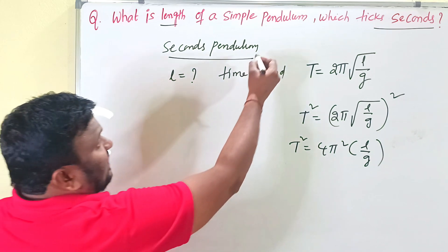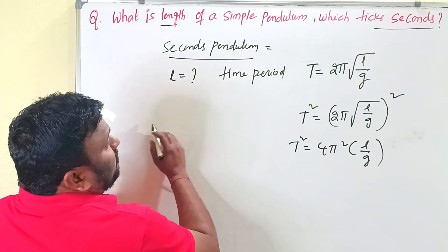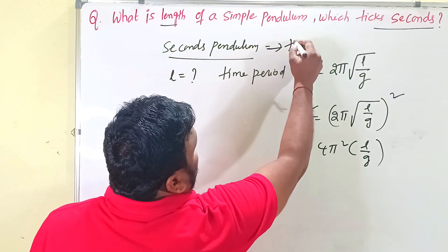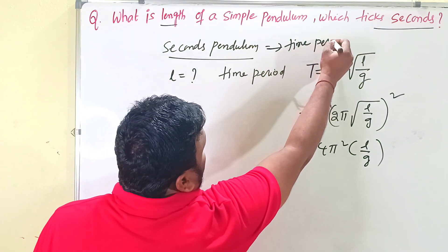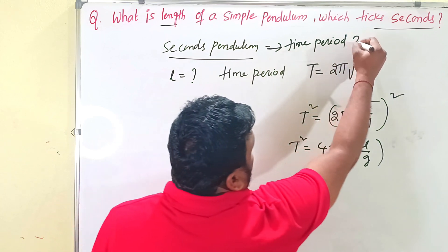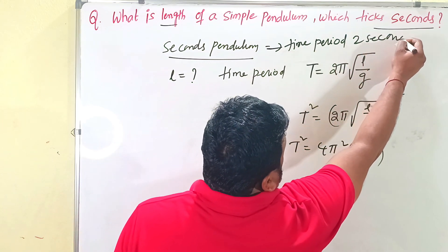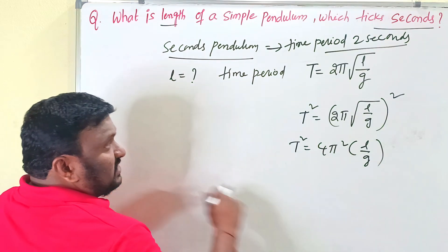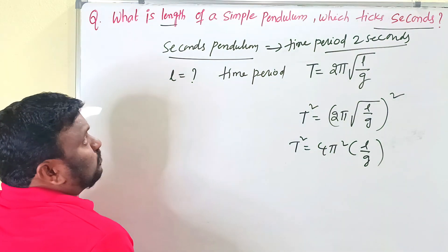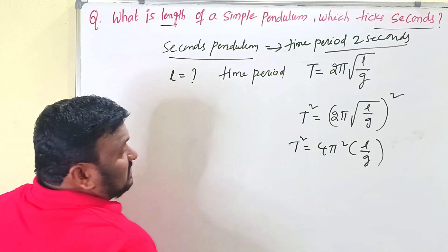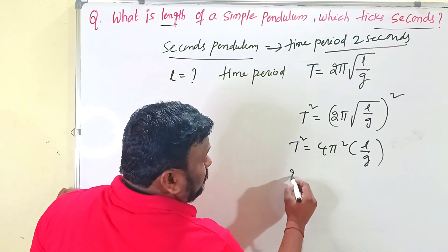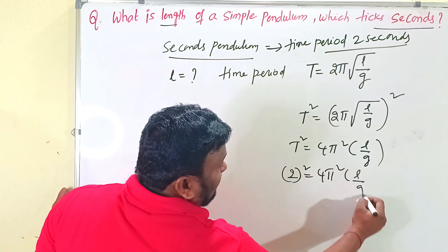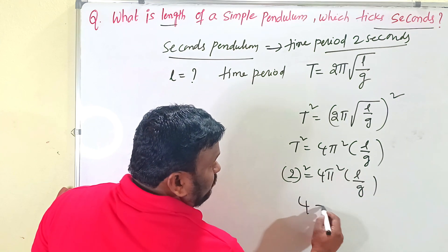For the seconds pendulum, the time period must be 2 seconds. A pendulum which completes one oscillation in 2 seconds is called a seconds pendulum. So here T = 2, and substituting: 2² = 4π² × (l/g), giving us 4 = 4π² × (l/g).